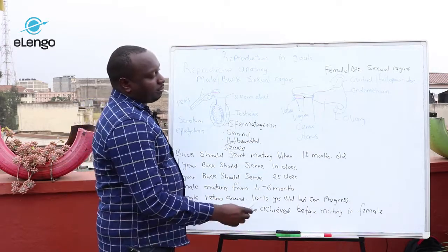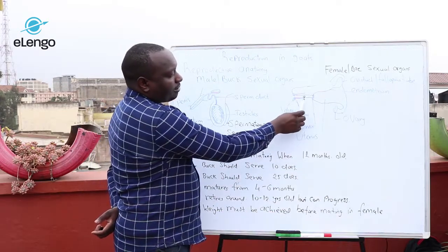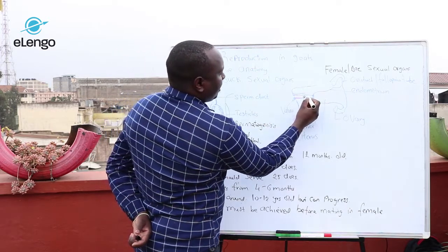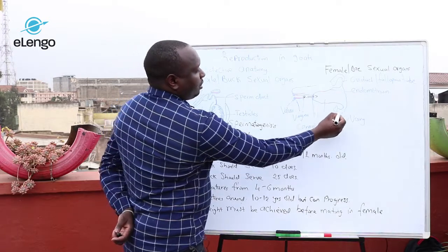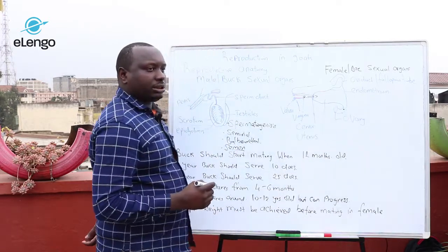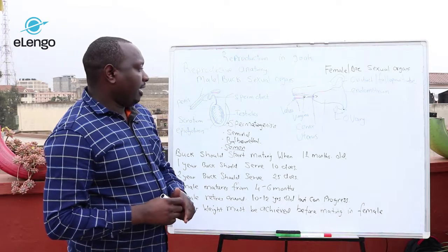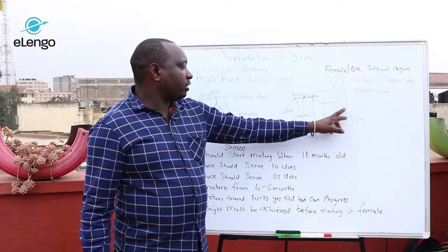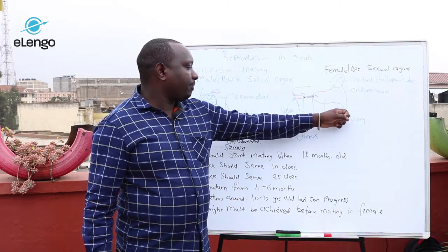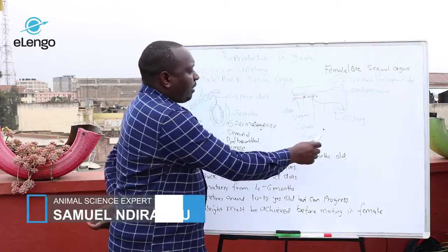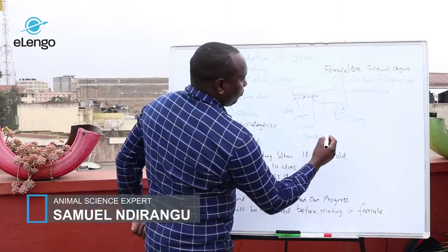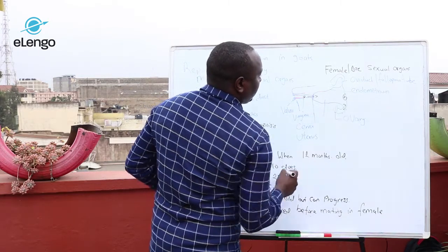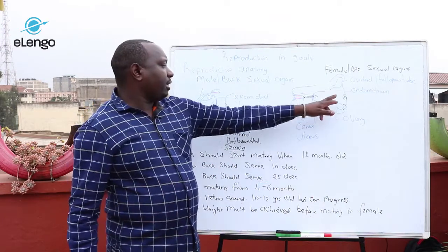Fertilization basically takes place during and after mating. Once the sperm cells have been deposited in the vagina and they move towards the uterus, fertilization takes place here. After ovulation, the egg moves from the ovary and is deposited here, and fertilization takes place. After some few days, the embryo moves and is deposited at this particular point, which is part of the endometrium of the uterus.